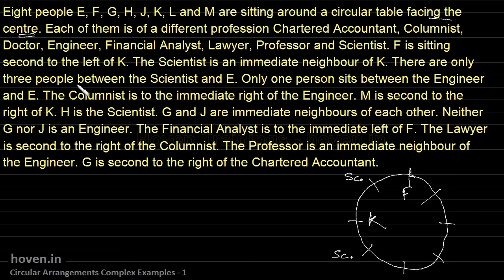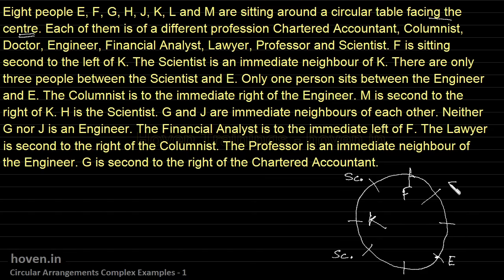There are only three people between the scientist and E. Walking three to this side — one, two, three — this will be E. And walking three to the other side, this will also be E. So whichever way you go, E comes at this same position. If the scientist is at this position, then E will be directly opposite, leaving three from each side.